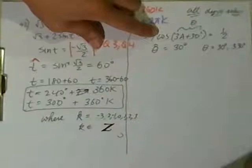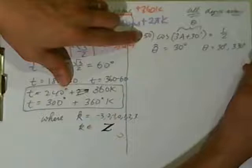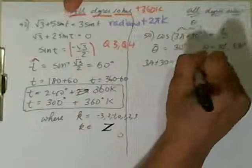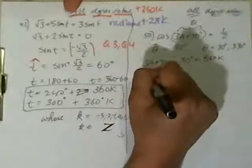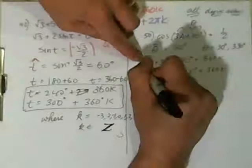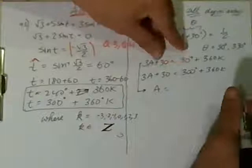Make sure you get this down, guys. Okay, so what do we do next? We're on number 50. So, we reset it. It's going to be 3a + 30 has to equal 30 + 360K. 3a + 30 has to equal 330 degrees plus 360K. I'm going to subtract 30 divided by 3. So, a is equal to subtract 30. You get 0 divided by 3. 360 divided by 3 is 120K.